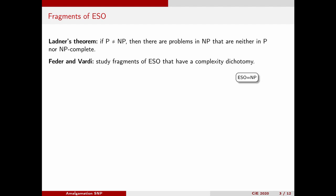Feder and Vardi investigated fragments of existential second-order logic that have a complexity dichotomy, in the sense that every problem that can be expressed in the fragment is either in P or NP-complete. An important fragment of existential second-order logic is called SNP for strict NP. Here, the first-order part of the sentence is required to be a universal sentence. We do not allow the use of the equality symbol in these sentences. The example sentence we saw earlier was of this form.